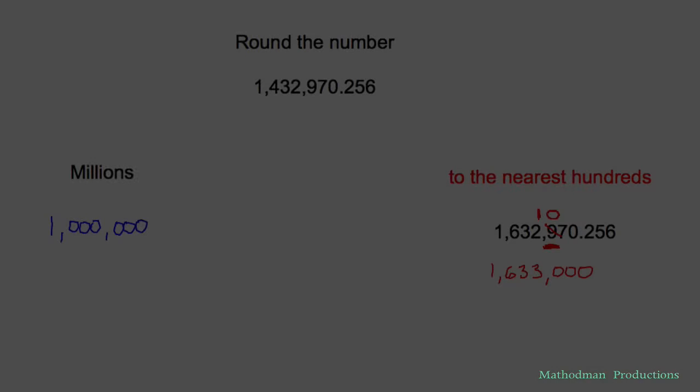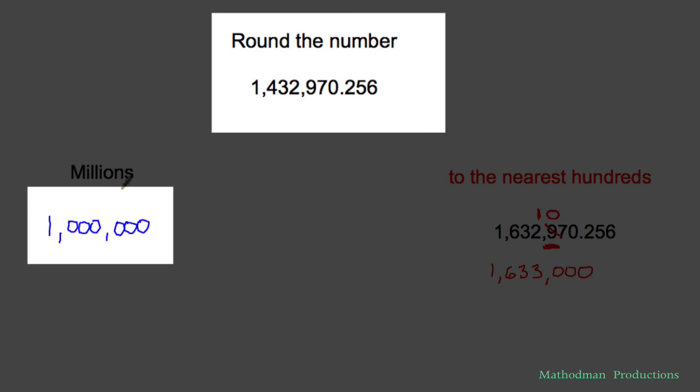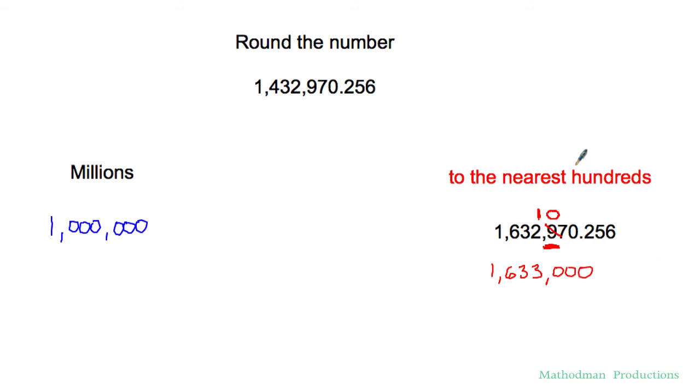Here are your answers. First one, round to the millions. The one is in the million spot. This number to the right of it is four and below, so that means that one is just going to stay as a one. Everything else behind it turns into zeros, so that rounds out to one million.